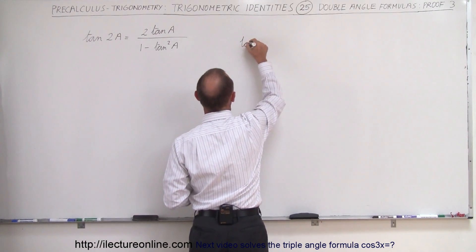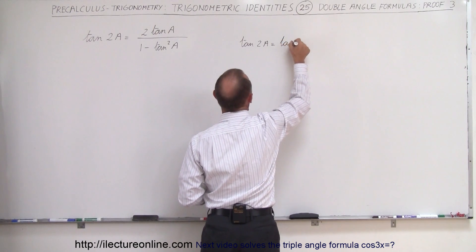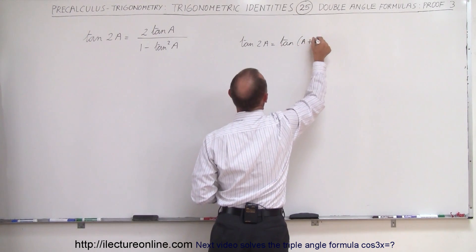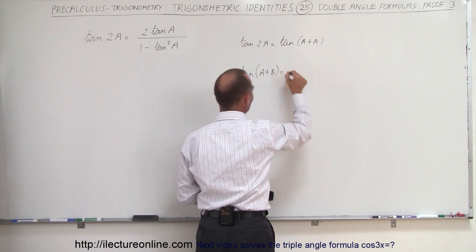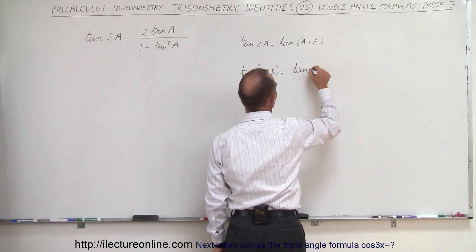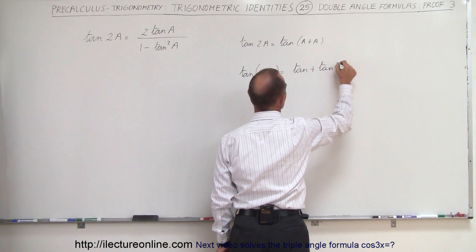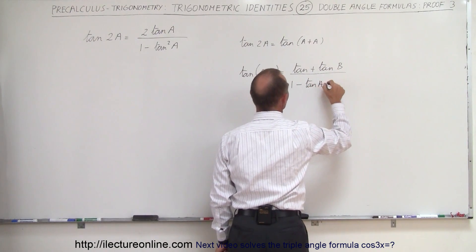So here we can write that the tangent of 2a can be written as the tangent of a plus a. And then we remember that the tangent of a plus b is equal to the tangent of a plus the tangent of b divided by 1 minus the tangent of a times the tangent of b.